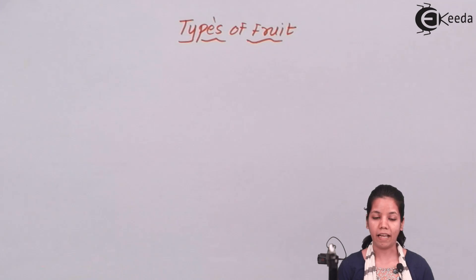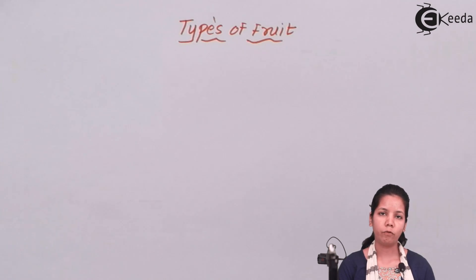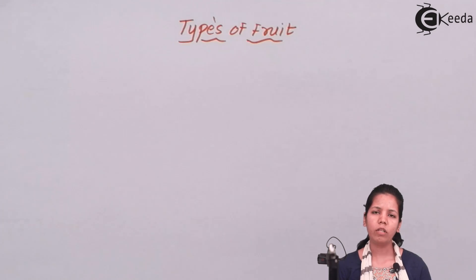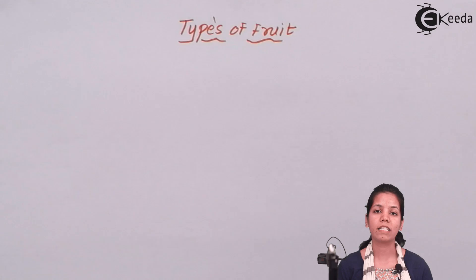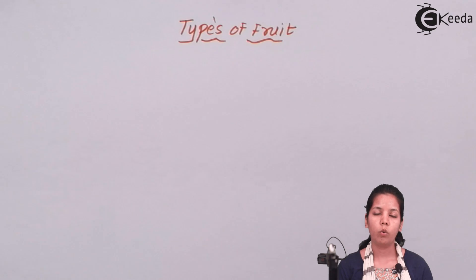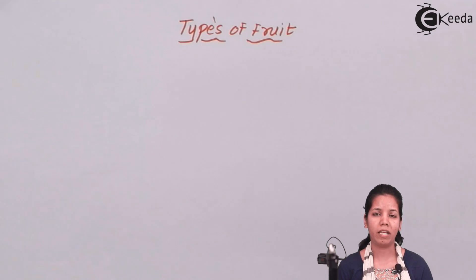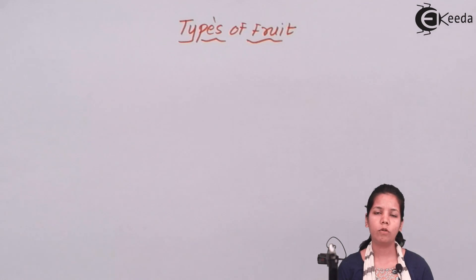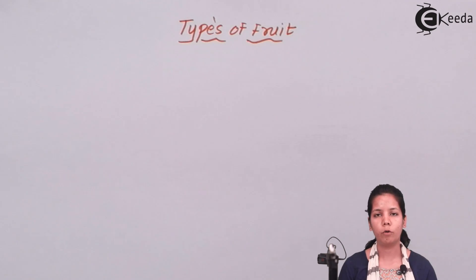Custard apple is a form of aggregate fruit. Whenever aggregate fruits develop, they develop from a polycarpillary ovary. During the fertilization of custard apples, many carpels or many gynoecia must have taken part. A large number of gynoecia fuse with a large number of pollen grains to give us this aggregate fruit. In certain flowers, for example in custard apple, they consist of two or three carpels or gynoecia, and these are fused by a number of pollen grains to form that aggregate fruit.